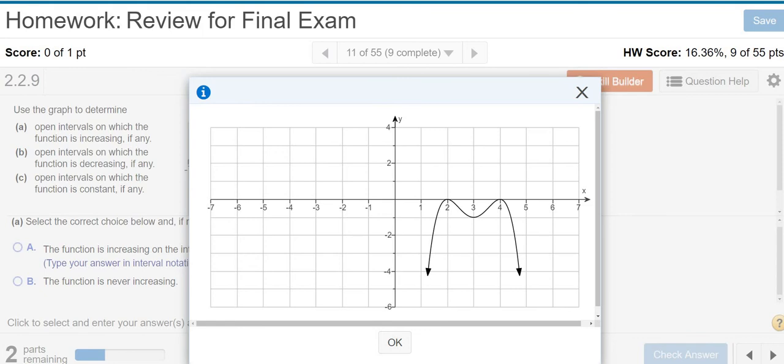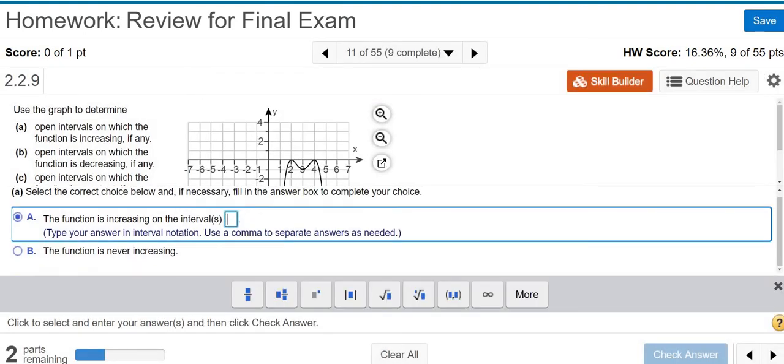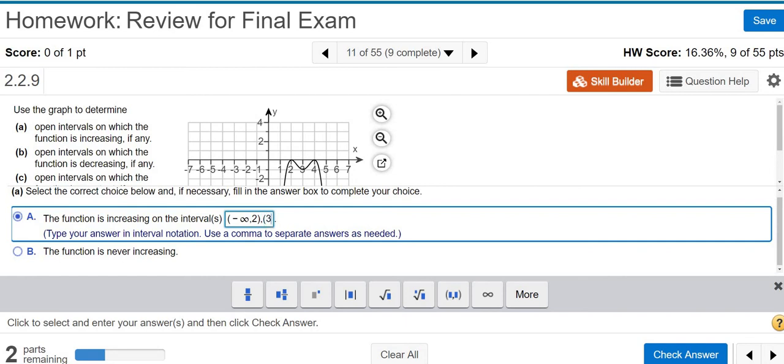So negative infinity to 2, increasing, 3 to 4, increasing. So I'm going to go ahead and type that in here to make sure it's correct. So parentheses and then negative infinity to 2, we said. And you can still see it here in the picture. And I'm going to put a comma. It says use commas to separate answers. Good. And then 3 to 4 and then parentheses.